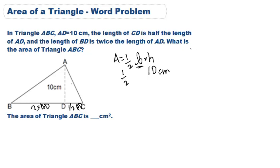We now know that BD is 2 times AD. We also know that AD is 10. So BD is 20.